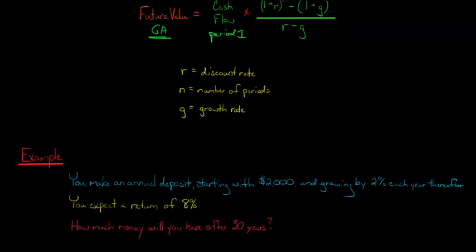Now you're going to make another deposit the next year, but that's going to be 2% higher than $2,000. And then the next year, it's going to grow again by 2%. So each year, you're putting in more and more money that you're investing. You're not just putting in $2,000 every year.